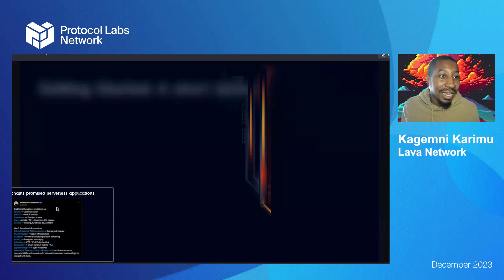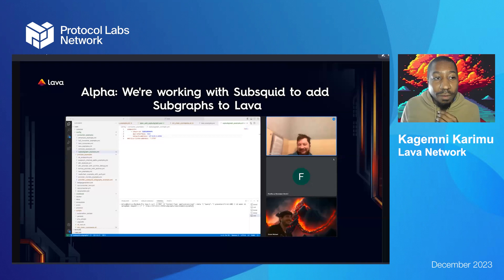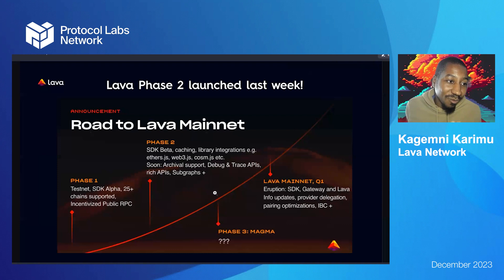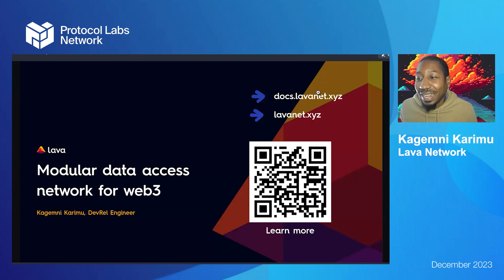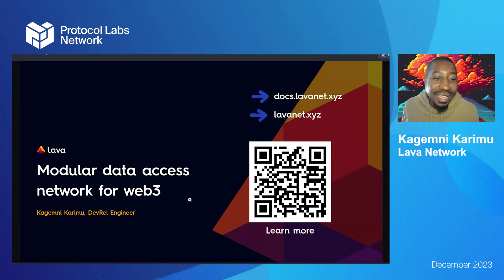That's really what Lava is all about right now — making the developer experience a lot smoother and more collected. We're now working with sub-squid to add sub-graphs to Lava and making additional advances with Lava phase two. We're on the road to Mainnet, which is really exciting and around the corner for us. We've been making big improvements to our protocol and doing a lot of integrations with partners. Check us out at docs.lavanet.xyz. Once again, this is Lava presenting on Modular Data Access Network for Web3. Thank you.